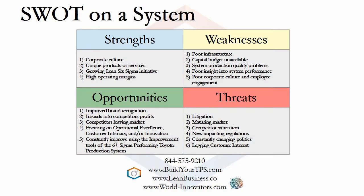Cultural strength can be key — it is one thing that makes the Toyota Production System so powerful. Financial condition can also be a strength, as well as utilizing Lean Six Sigma, which increases process velocity, improves quality, and decreases process cost. SWOT weaknesses could be your system's operating infrastructure or your financial health. Quality and culture could also represent weaknesses. Some opportunities might be improving your brand recognition, which is an inroad to competitors' income.